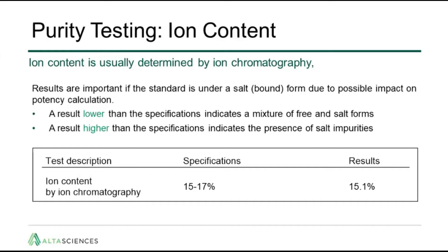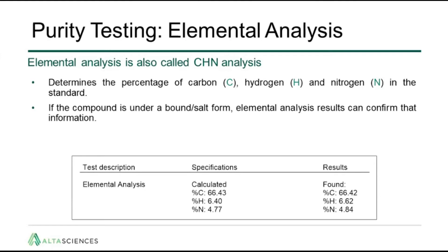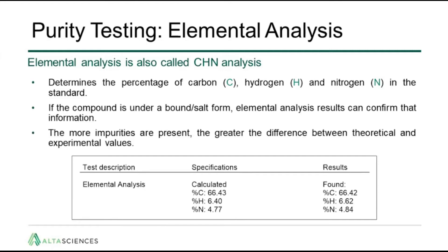If an ion content result is lower than specifications, it could indicate a mixture of free and salt forms. If higher, it would indicate the presence of salt impurities. Elemental analysis, also called CHN analysis, determines the percentage of carbon, hydrogen, and nitrogen in the standard. If the compound is in a bound or salt form, elemental analysis results can confirm that information. Several techniques can corroborate each other and give more information overall on a reference standard. If more impurities are present, there will be a greater difference between the theoretical and experimental values reported on the certificate of analysis.